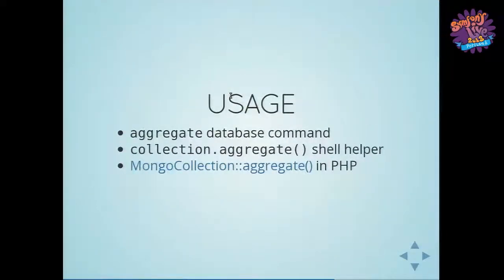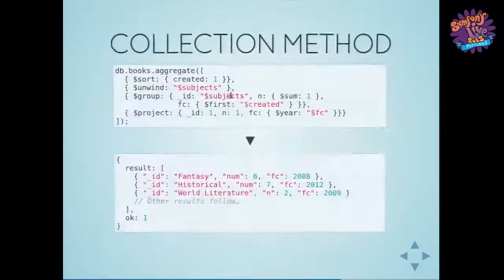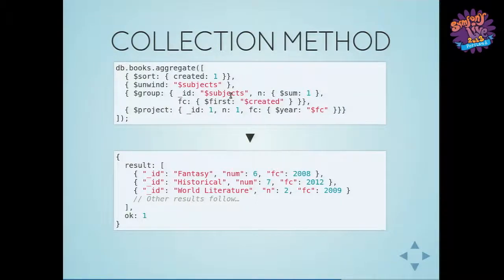For invoking this framework: the main database command is just called aggregate. Like most commands developers would use, there's usually a helper function on the collection — so like map-reduce has a helper, find-and-modify does too. In the PHP driver, on the Mongo collection object we have an aggregate method which is shorthand instead of running the command on the database. When we run using the collection method, we basically give it an array of objects, and each object is a pipeline operator.